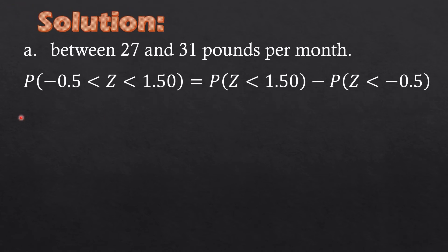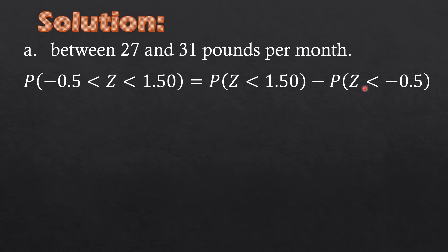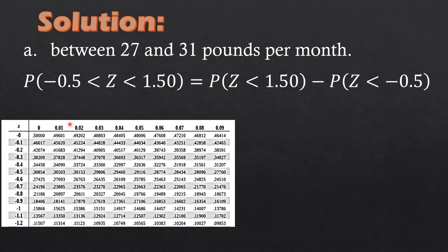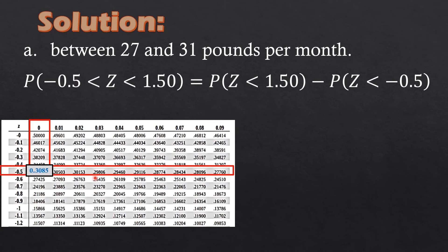We now have P(negative 0.5 < z < 1.5). This is a between probability, so we subtract: P(z < 1.5) minus P(z < negative 0.5). From the negative z-table for negative 0.5, the row is negative 0.5 and the second decimal column is 0, giving an intersection value of 0.3085.